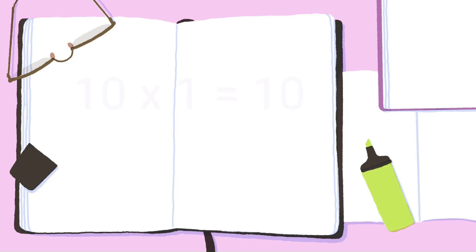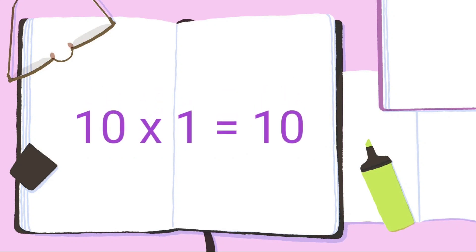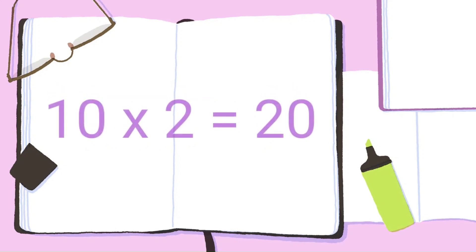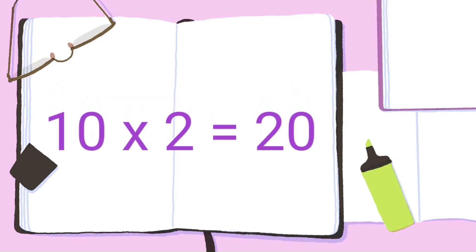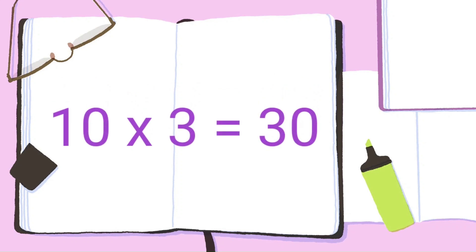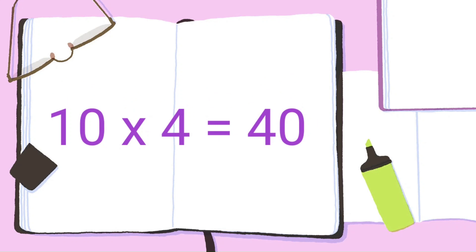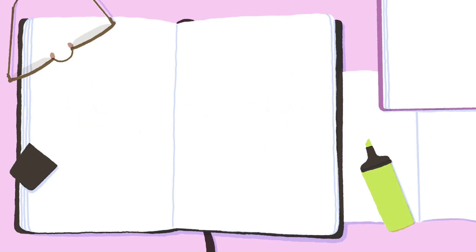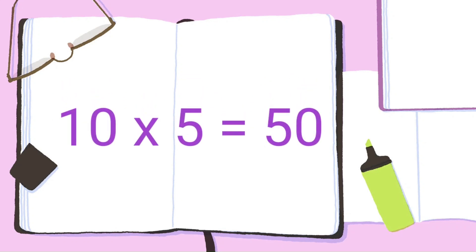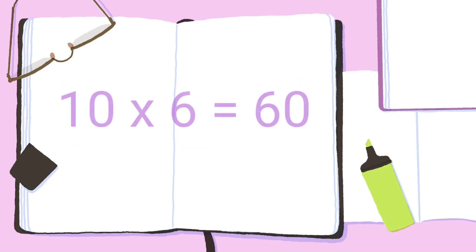Table of 10. 10 1's are 10. 10 2's are 20. 10 3's are 30. 10 4's are 40. 10 5's are 50.